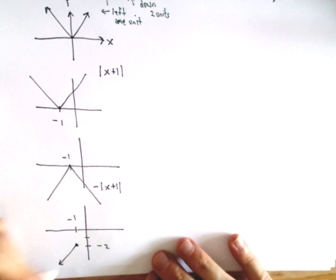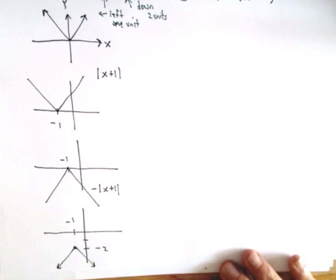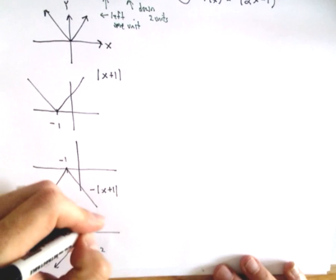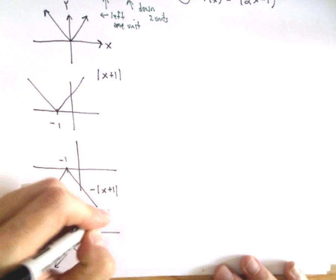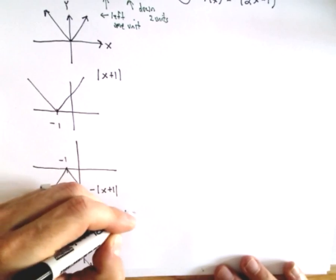So it will still have that same V-shape to it. So that's all there is to it, again just sort of shifting, reflecting, and moving. So that would be the graph of -|x+1| - 2.